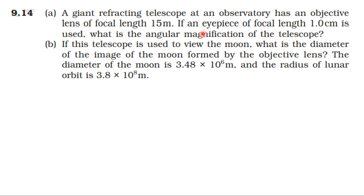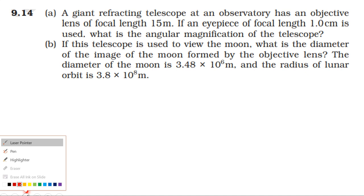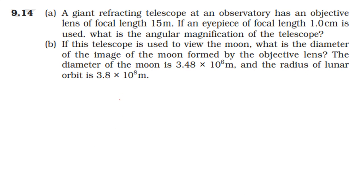The angular magnification of the telescope — the final image is formed at infinity. The magnifying power when the image is formed at infinity equals the focal length of the objective lens divided by the focal length of the eyepiece. Focal length of the objective lens is 15 meters and focal length of the eyepiece is 1 centimeter.